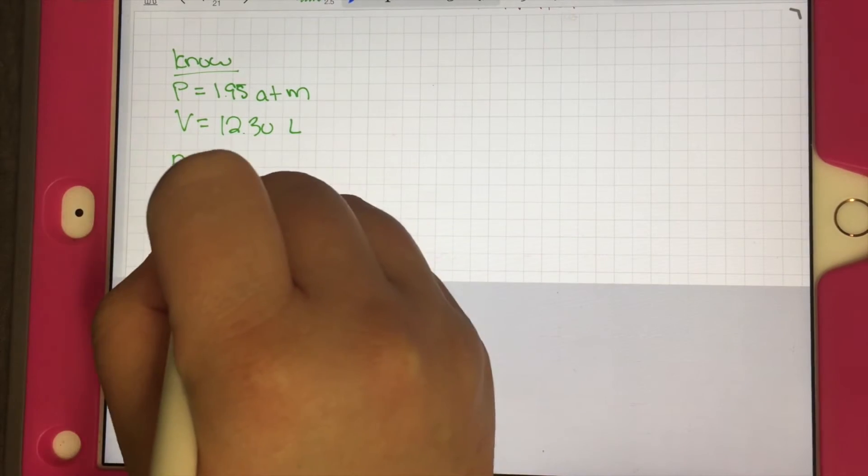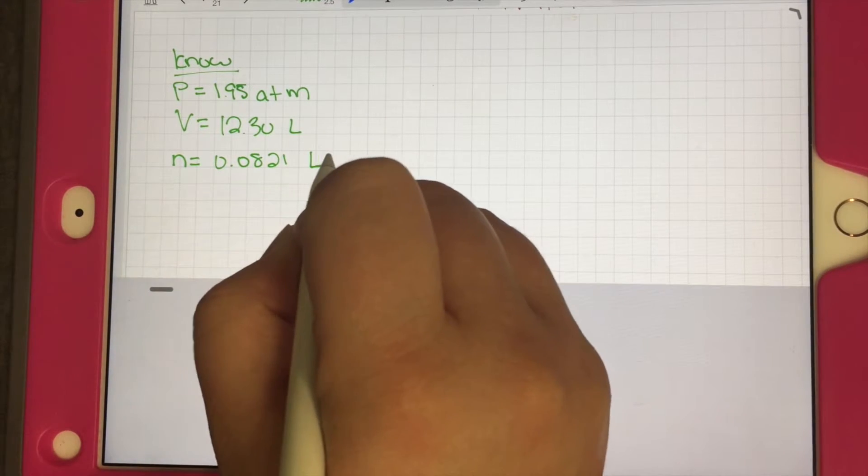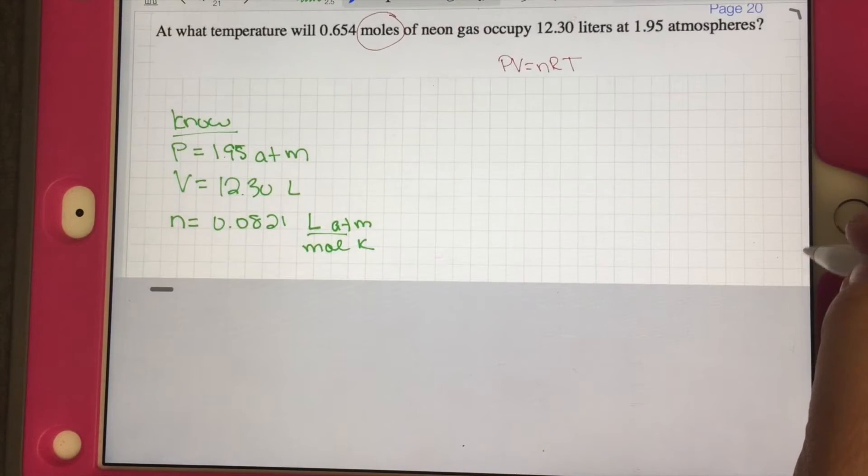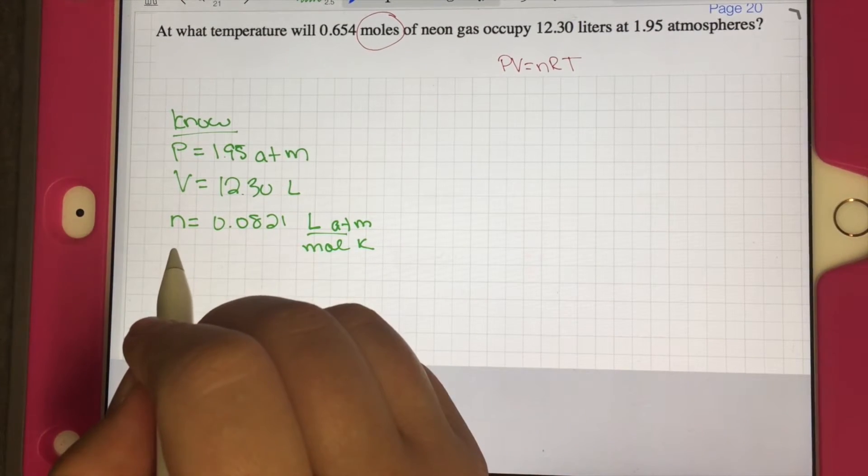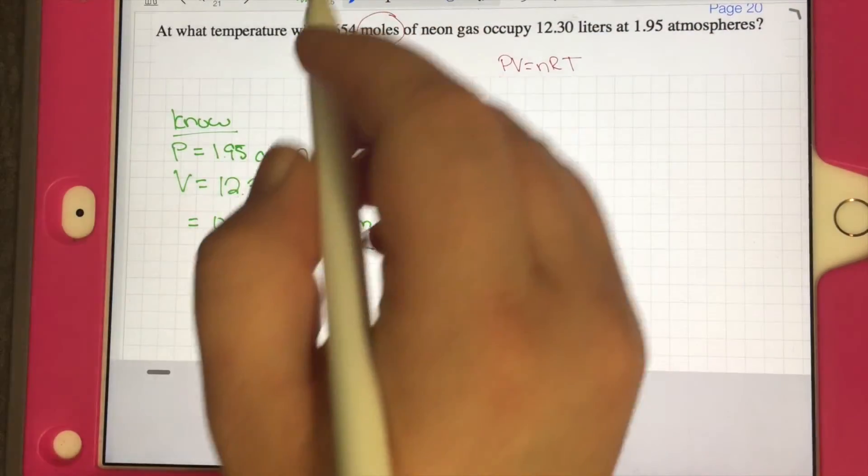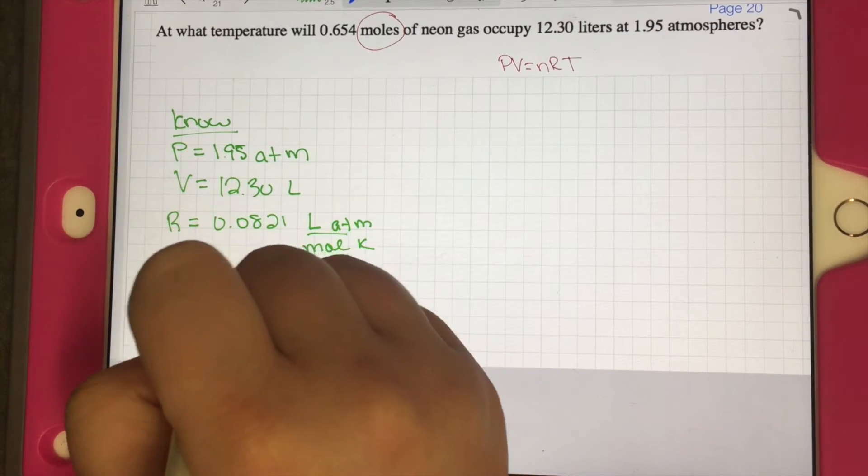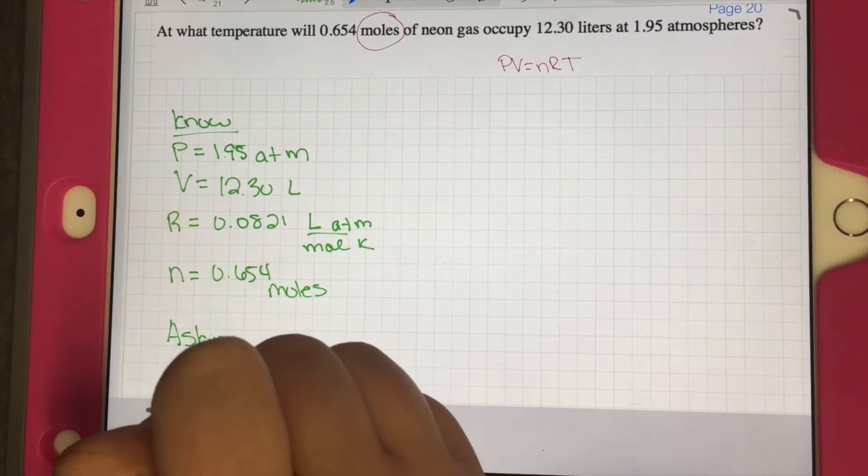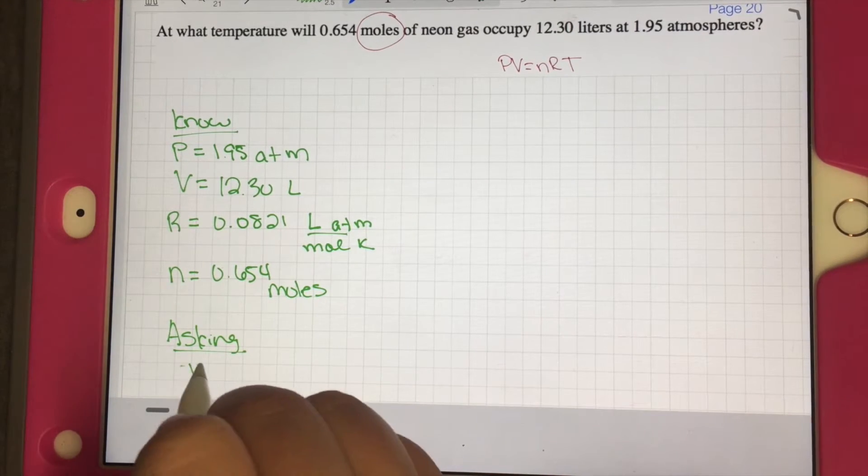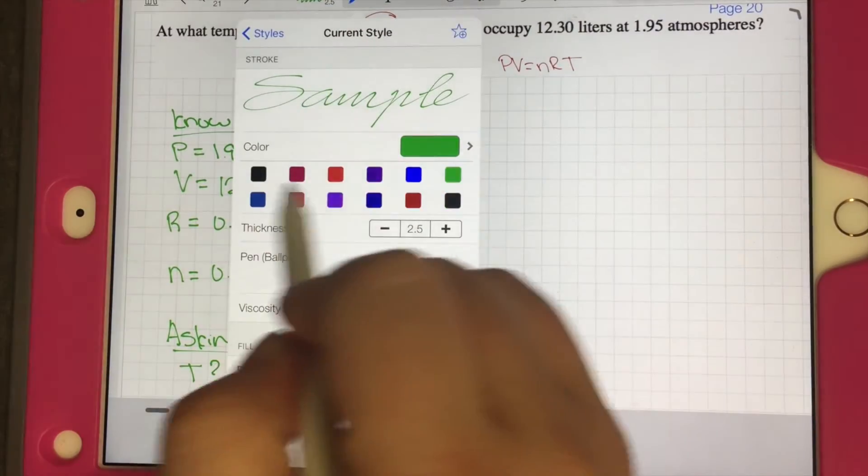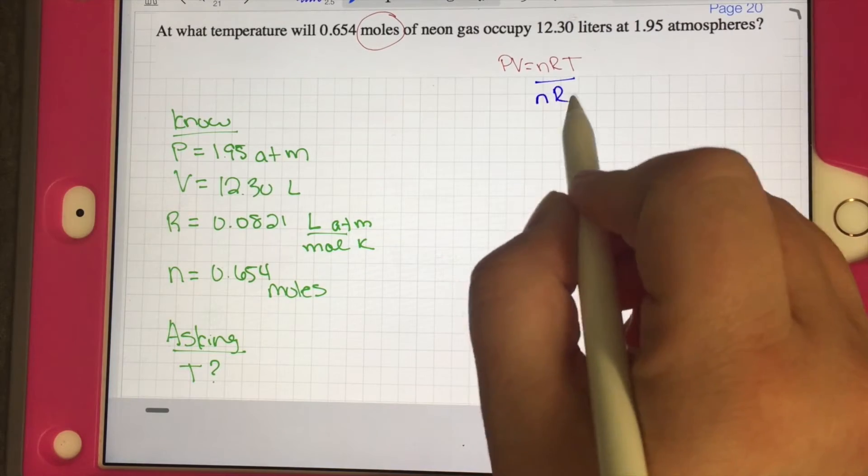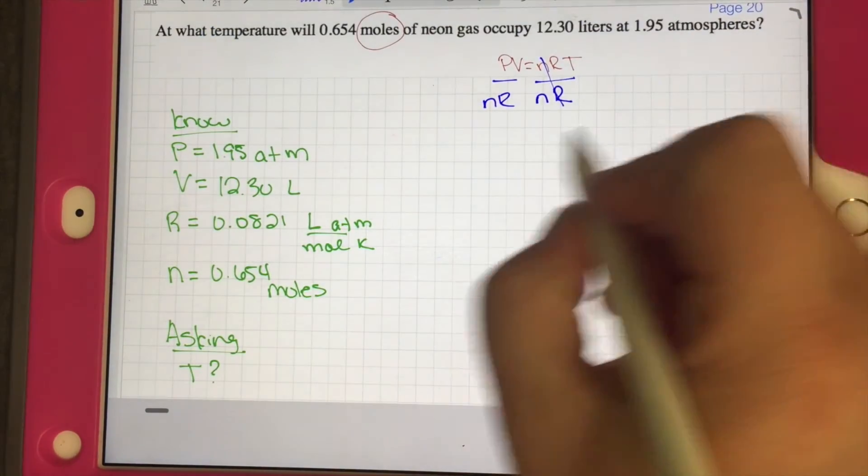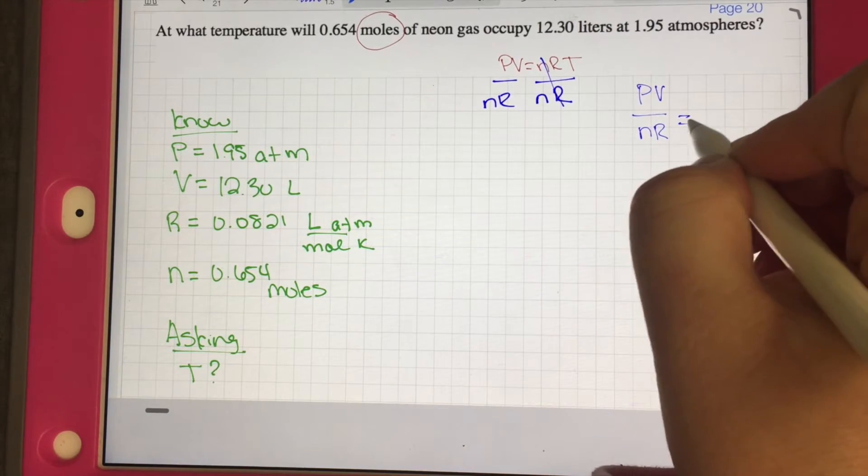We know that R is always equal to 0.0821 liters atm over moles times Kelvin. And n, the number of moles, is 0.654 moles. They're asking for temperature. I'm going to rearrange my equation to solve for temperature. We're going to divide by n times R. So our new equation is PV over nR equals T.